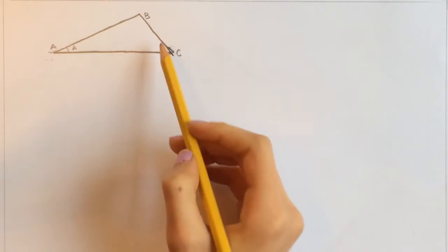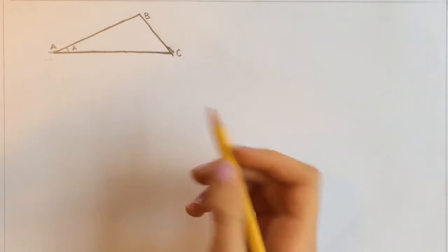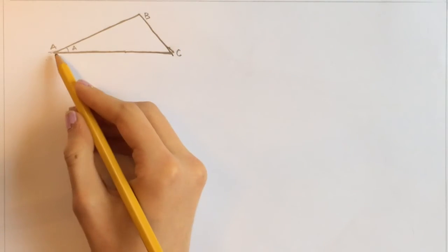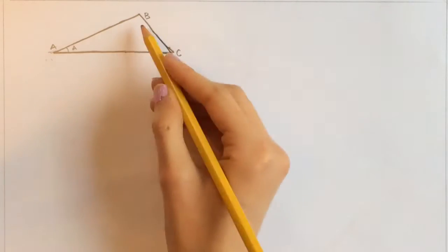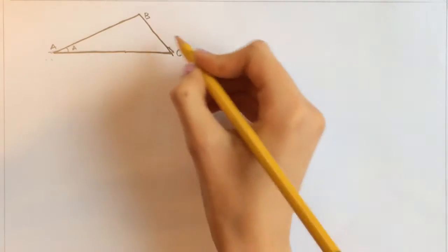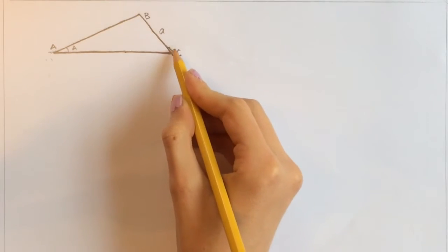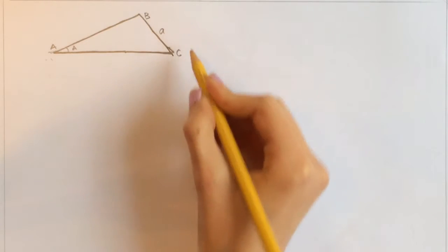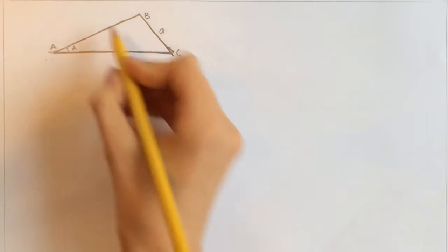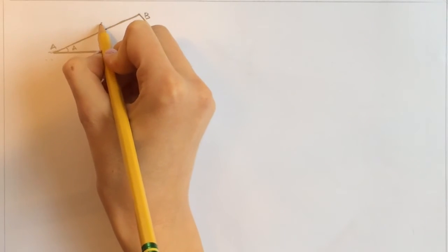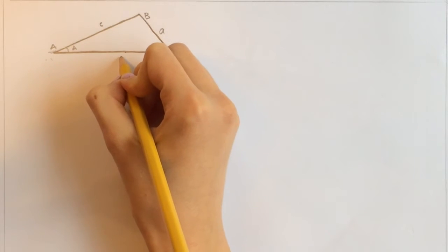As for the sides, each angle has a corresponding side that is opposite the angle. So angle A's corresponding side would be little a, and the other sides are little b and little c.